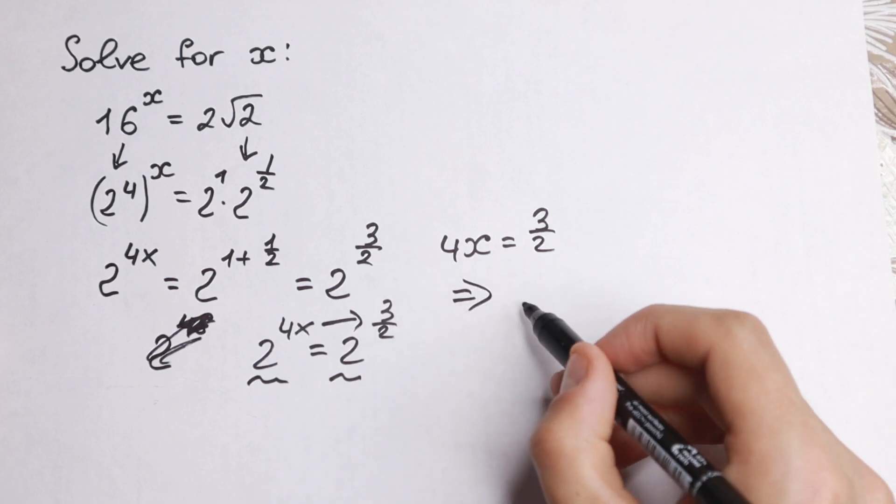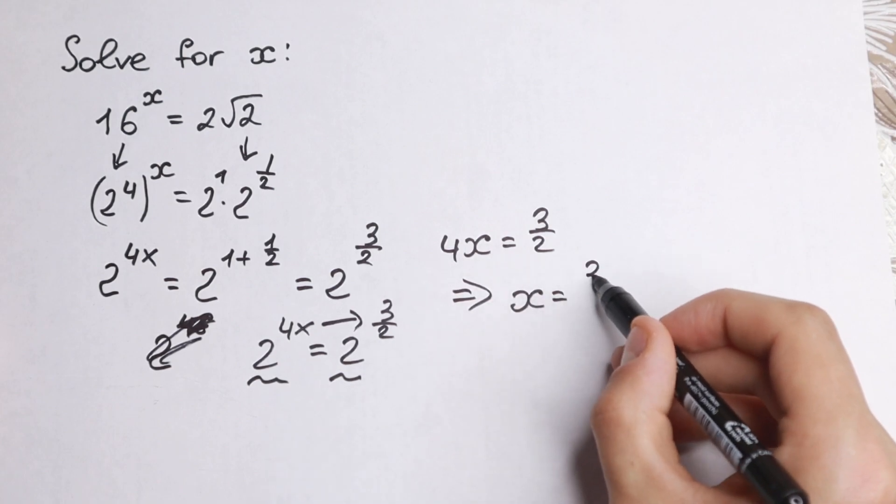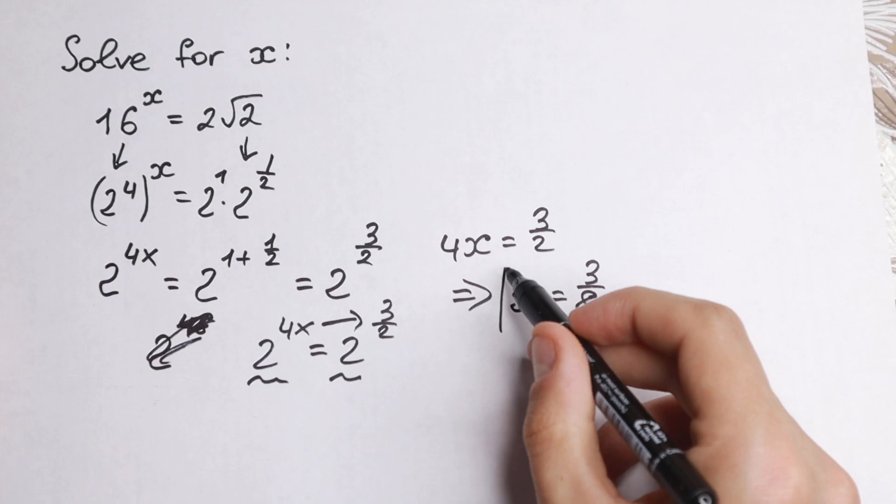So we will have 4x equal to 3 half, dividing both sides by 4, and we'll have x equal to 3 over 8. This is our answer.